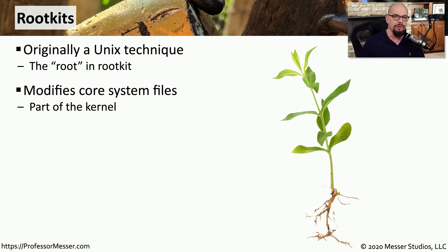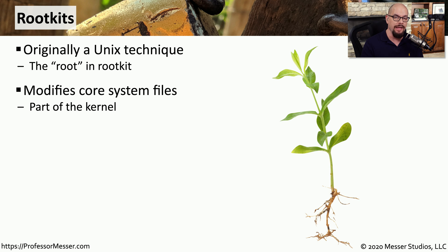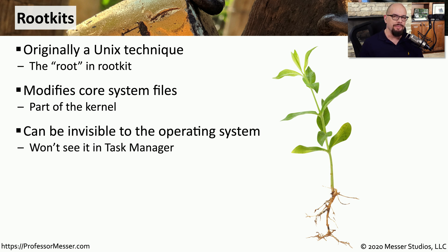A common characteristic of a rootkit is that instead of modifying files in your operating system, it's modifying files in the kernel of the operating system. These are the foundational building blocks of the operating system, and everything that runs in the OS runs on top of that kernel. Because this malware now becomes part of the operating system itself, it effectively becomes invisible to antivirus and anti-malware software.